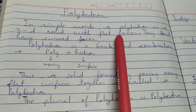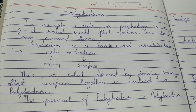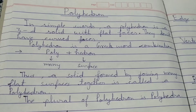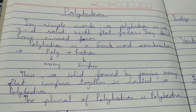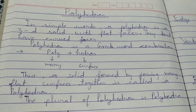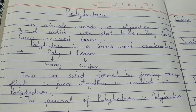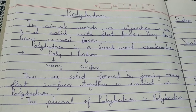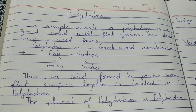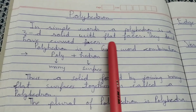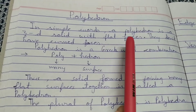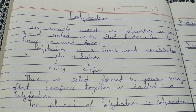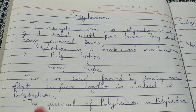Similarly, among polyhedrons we have cube, cuboid, prism, and pyramids. Sphere, cylinder, and cone are not polyhedrons because they don't have flat faces — they have some curved faces as well.